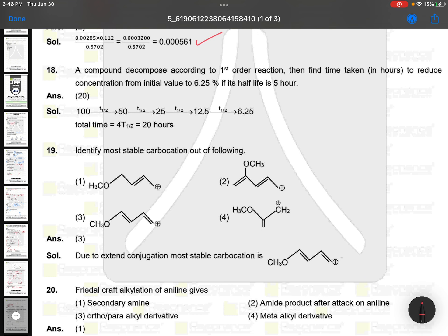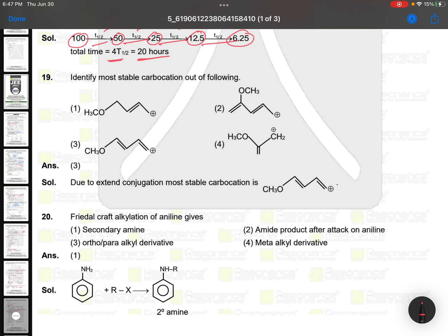The compound decomposes according to first order reaction. Time taken in hours to reduce the concentration from 100 to 6.25. 100, first half-life 50, second half-life 25, third half-life 12.5, fourth half-life 6.25. That means one, two, three, four half-lives. So 4 × t½ = 20 hours because half-life is 5.